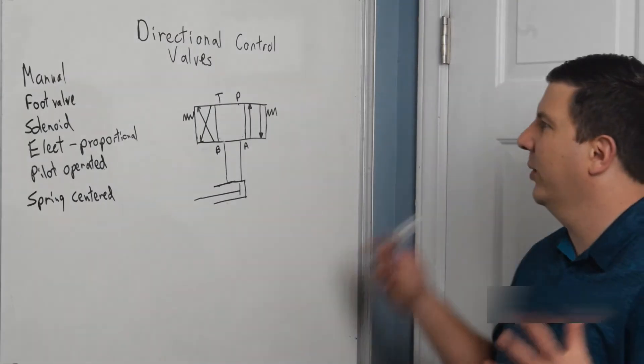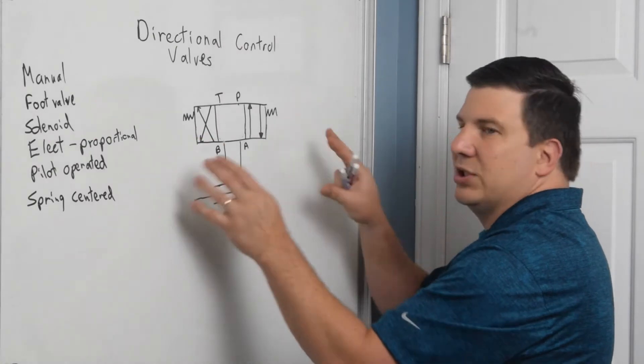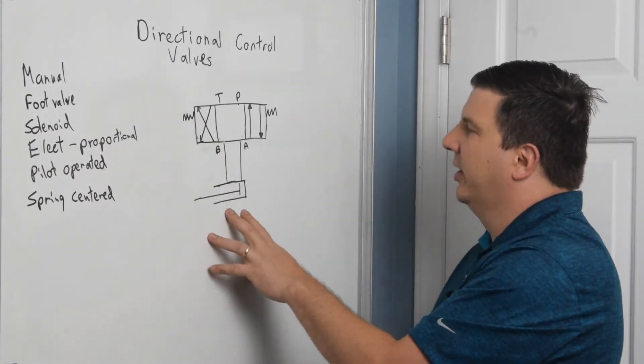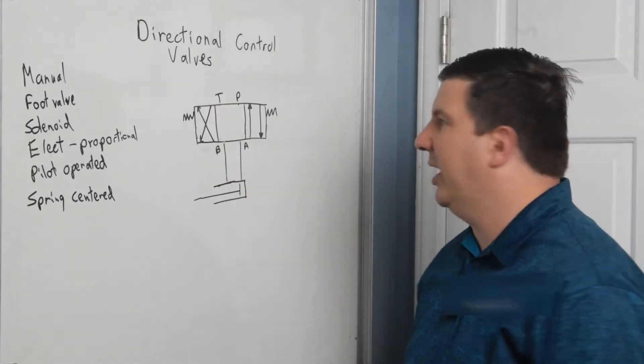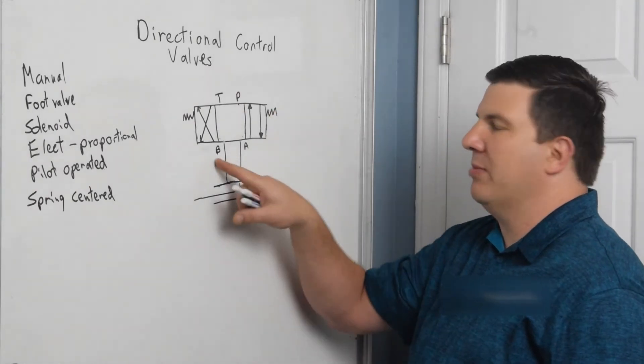So let's look at what a valve looks like. I'm just talking about four-way, three-position. This is a typical direction of controlling a cylinder right here. I've got one, two, three, four ports into the system. I have pressure, my tank line, my A port, and my B port.